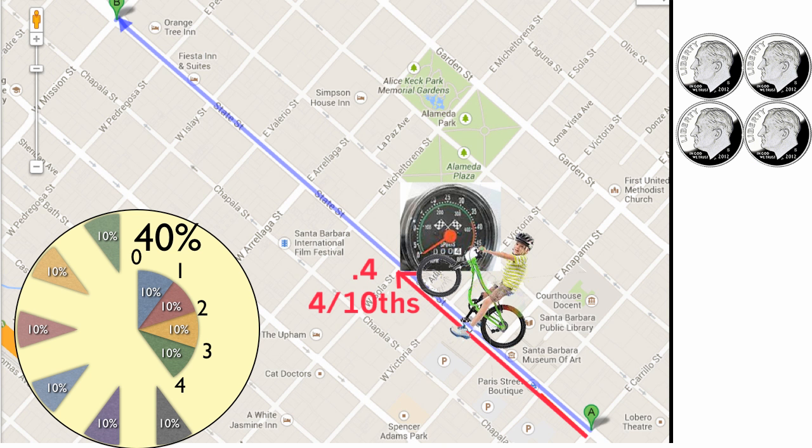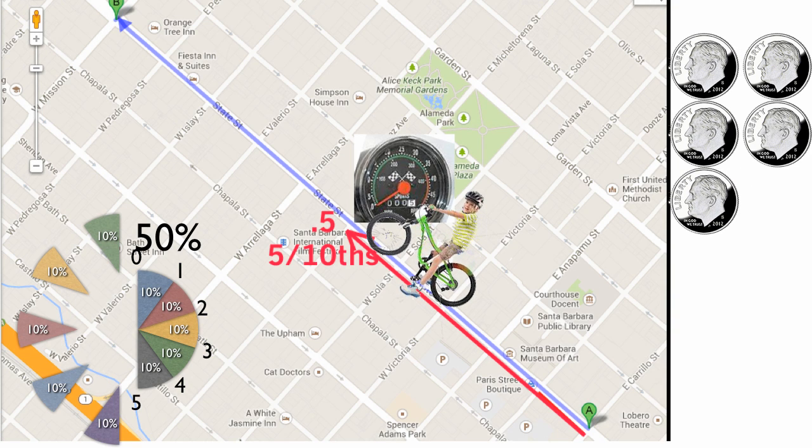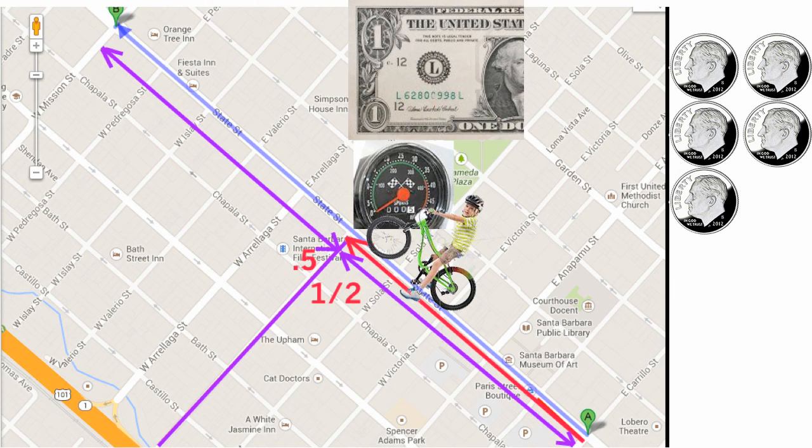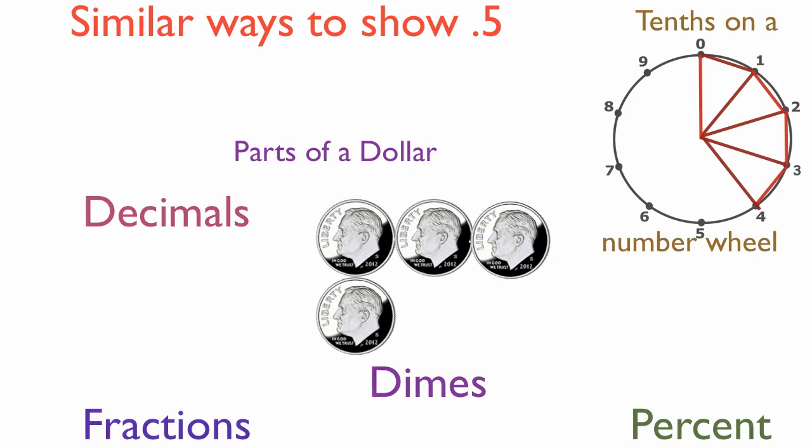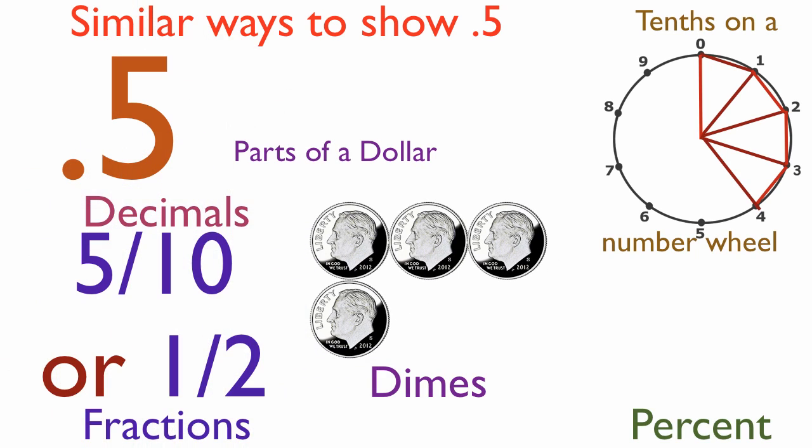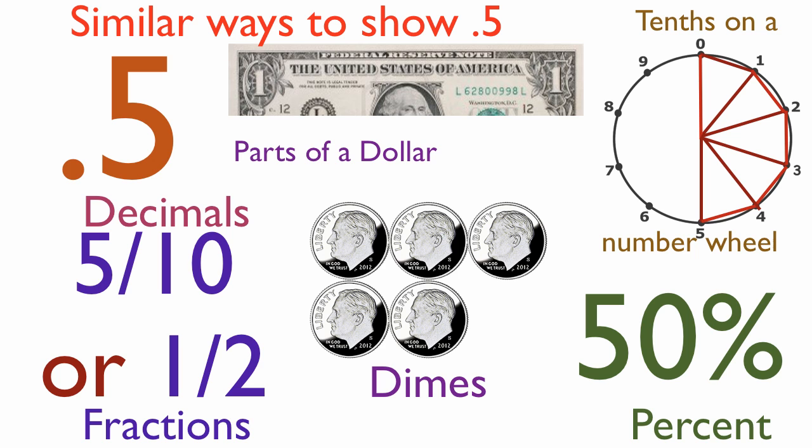Chris now goes forward another block and picks up a fifth dime. He is halfway there. He's gone five blocks and has five blocks to go. He has gone 0.5, or five-tenths, or one-half, or 50%, or to number five on the number wheel, has his fifth dime, and has half of a dollar, or five-tenths of a dollar.